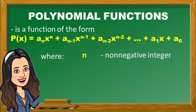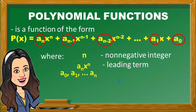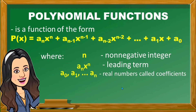The highest or greatest power of a variable is called the degree of the polynomial. Next, a sub n x raised to n is called the leading term — the term with the highest power of x. Next, a sub 0, a sub 1, up to a sub n are real numbers called coefficients, or the numerical coefficients of the variable in the given polynomial.